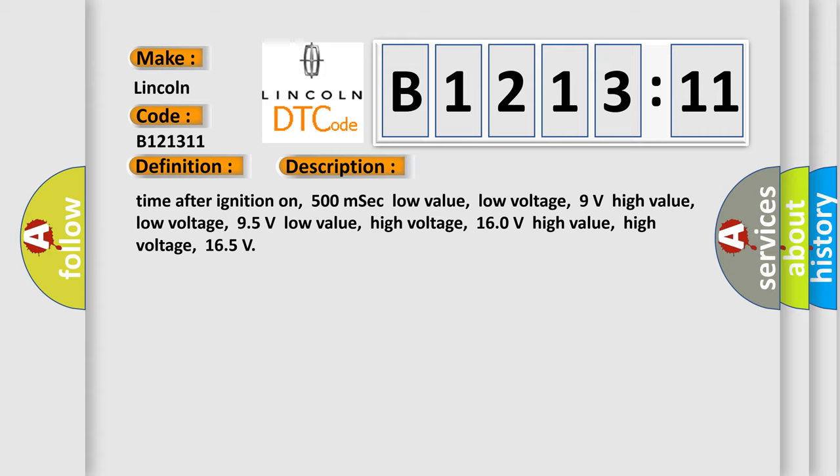Time after ignition on: 500 milliseconds. Low value low voltage: 9 volts. High value low voltage: 95 volts. Low value high voltage: 160 volts. High value high voltage: 165 volts.